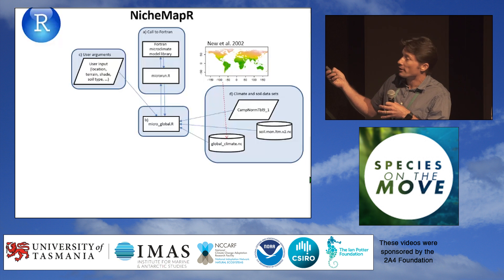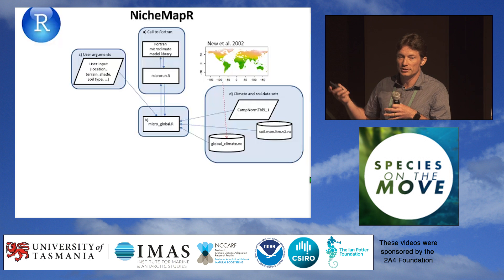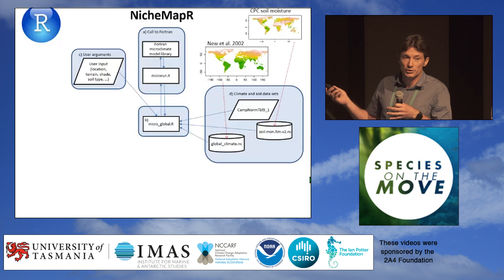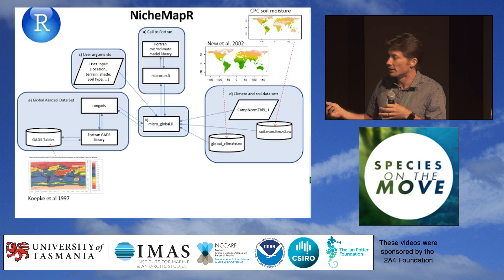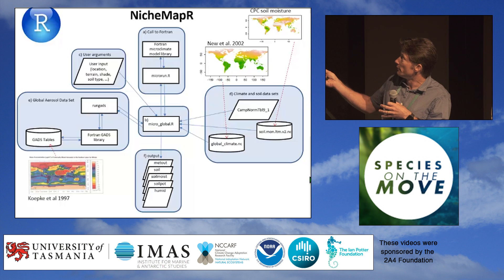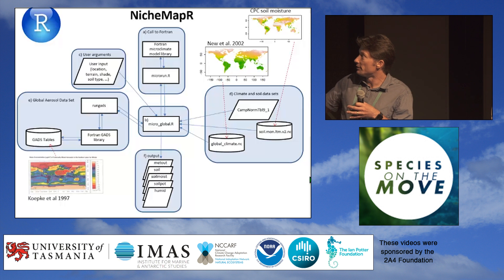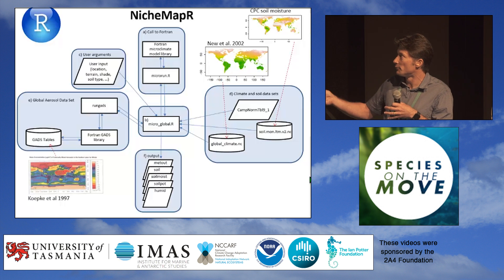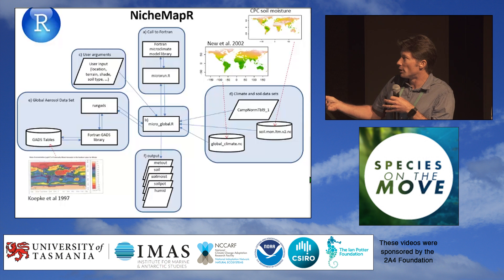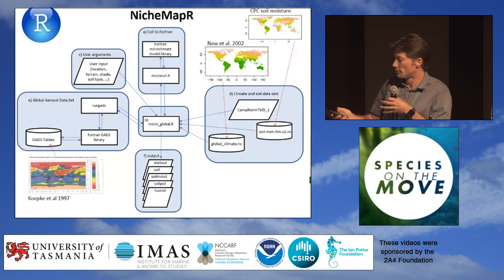The global climate database is based on the New and colleagues 2002 long-term average global climatology, which has all the variables the model needs. Optionally, there's a global soil moisture dataset and a global aerosol dataset you can also use. The model then produces a set of outputs — above-ground conditions, soil temperatures, and if you turn on the soil moisture modelling option: soil moisture, soil water potential, and soil humidity. You can also substitute your own dataset by modifying the existing scripts.